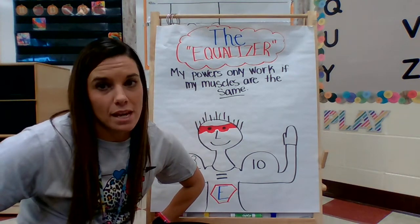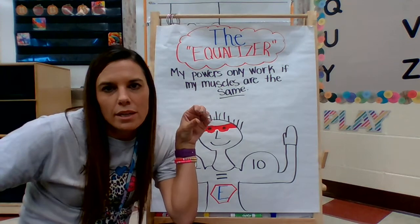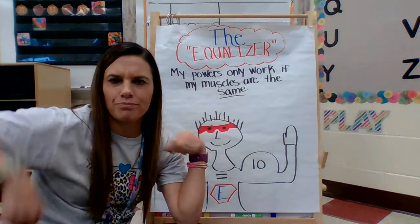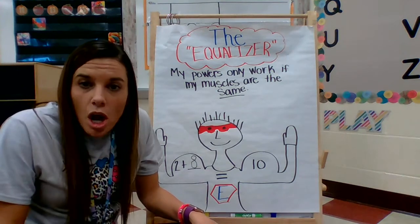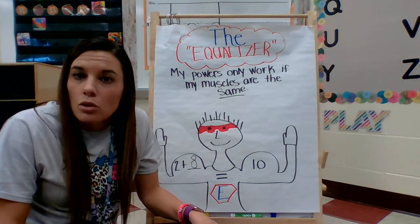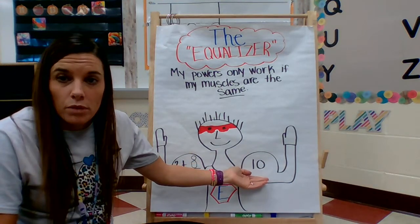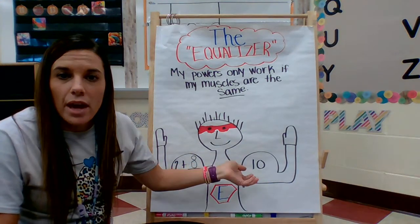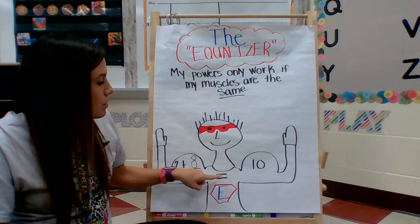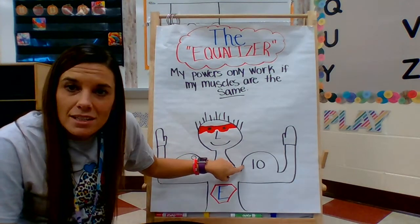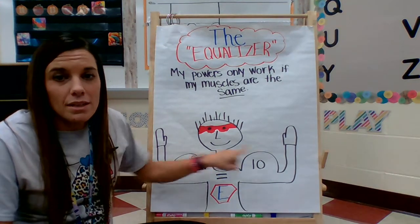He wants his muscles to be the same size. Can you imagine being a superhero and having one tiny muscle and one big muscle? Well, that would be silly, wouldn't it? When we talk about equations—remember, equations are any number sentence or even just a number—when we talk about making them equal, we want them to be the same size. On both sides of the equal sign, they need to be the same size.